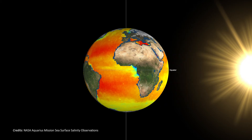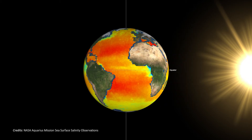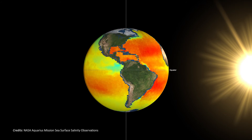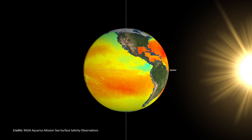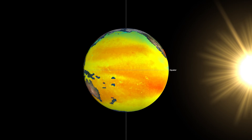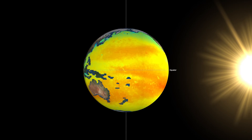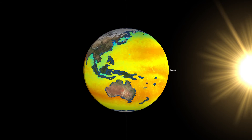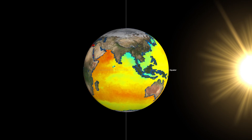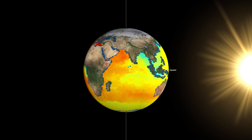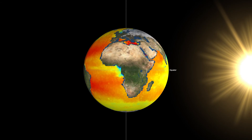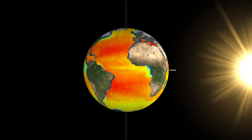This results in a latitudinal distribution of salinity, which generally is saltier near the equator and fresher near the poles. In addition, in semi-closed seas such as the Mediterranean, excess evaporation can lead to increased salinity. In regions near the equator, a band of lower salinity is also found due to excess precipitation.